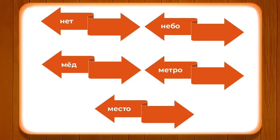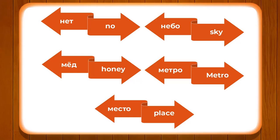Let's look at these new words: NYET, NEBO, MYOD, METRO, MYESTO. Some of these are used very often — especially NYET with DA. DA means yes, NYET means no, so you can use NYET in any day-to-day communication for saying no. NEBO means sky, MYOD means honey, MYESTO means place, and METRO means metro — a borrowed word used in Russian.